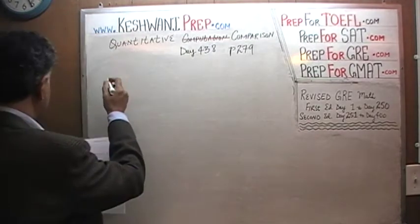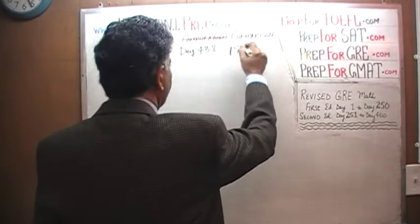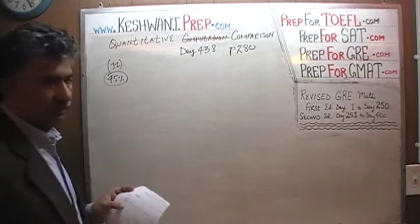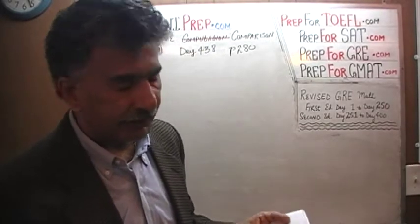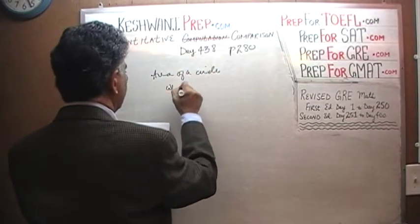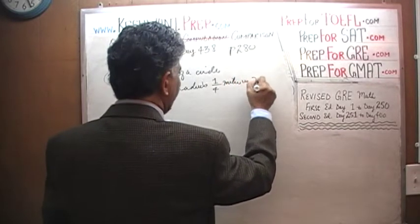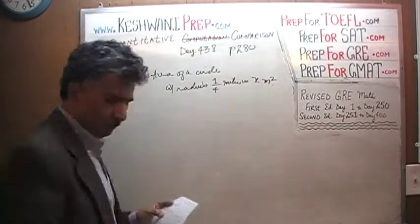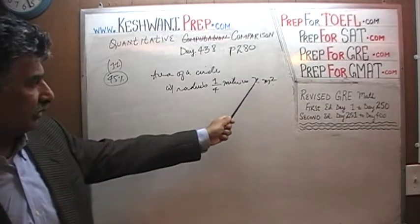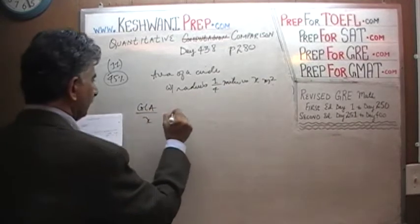Here is what problem number 11 has to say — it is actually on page 280. When it appeared in the exam, about 45% of the people had no trouble with it, but a little over half the people did miss it. We are told that the area of a circle with radius one quarter of a meter is x squared meters. We are being asked to compare column A, which is x, versus column B.